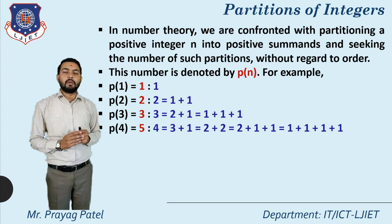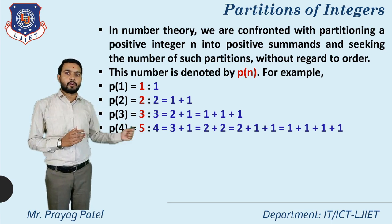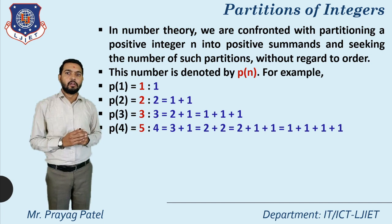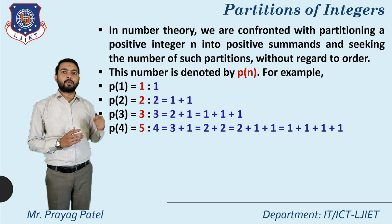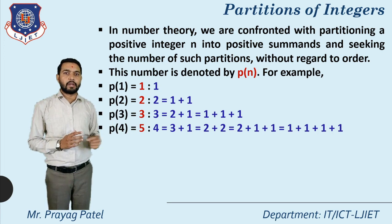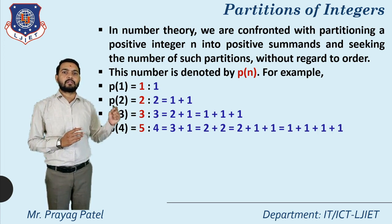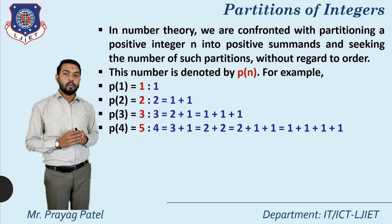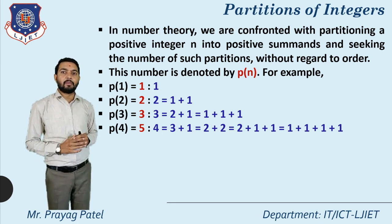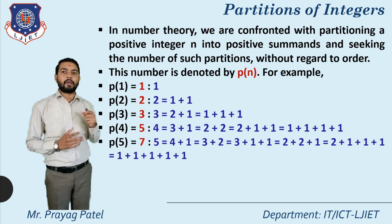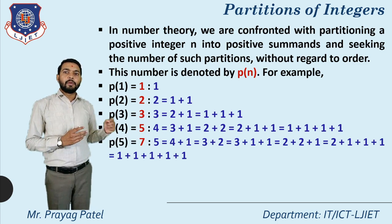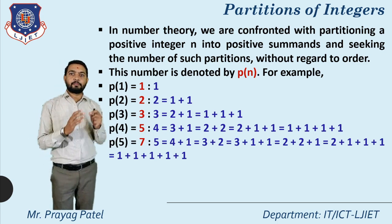For p(4), p(4) equals 5, meaning five different ways are available for writing 4: first is 4; second is 3 plus 1; next is 2 plus 2; next is 2 plus 1 plus 1; and last is 1 plus 1 plus 1 plus 1. So these five ways are available for writing 4.